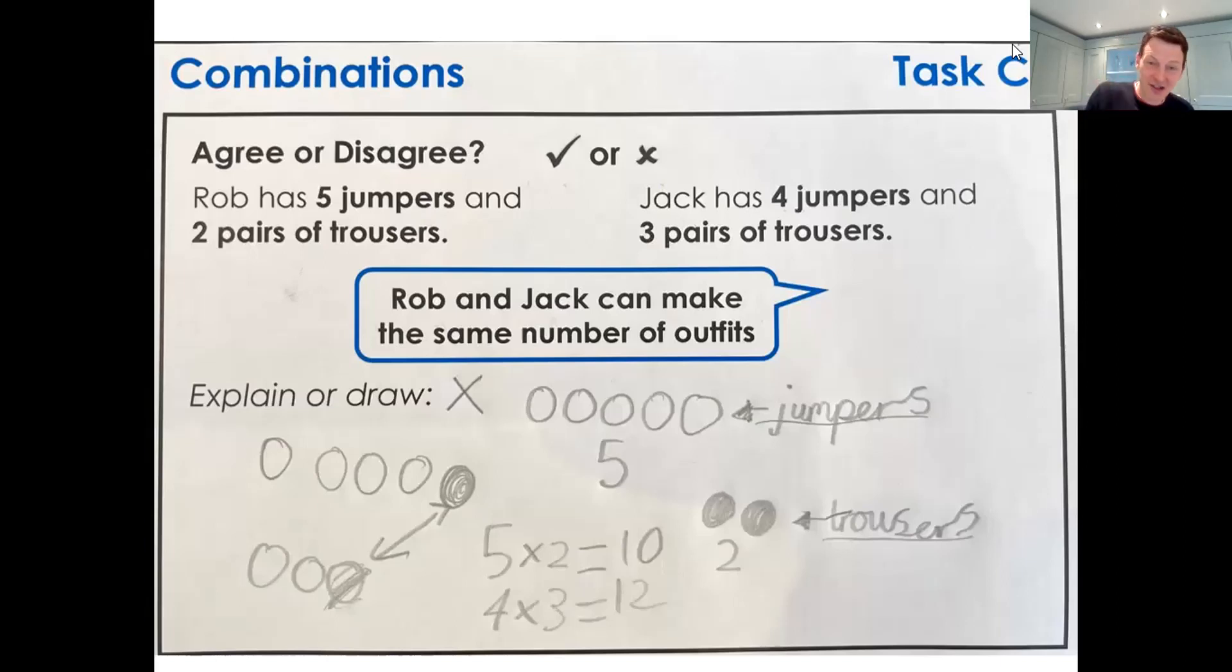Because if we take that picture for Jack, if we move one up there, then that's what Rob has, five jumpers and two pairs of trousers, whereas Jack has these four jumpers and those three pairs of trousers, but that's actually more combinations. And it's a really abstract idea for her to explore.